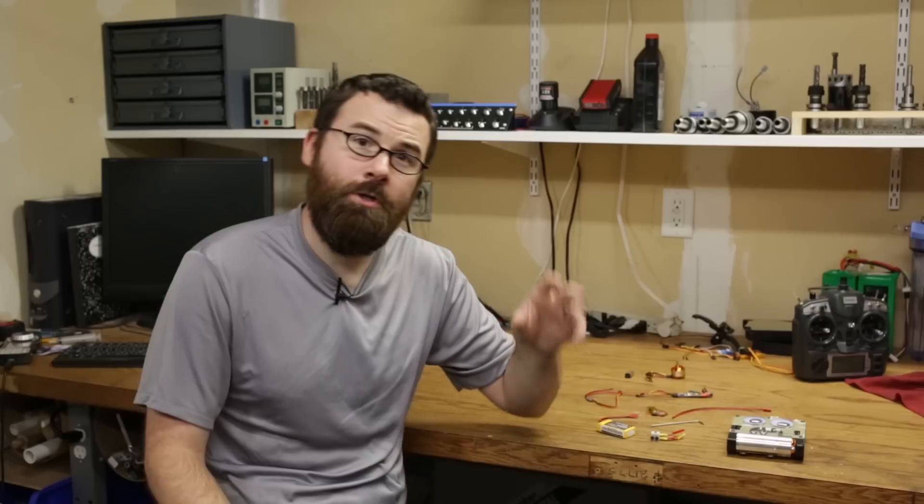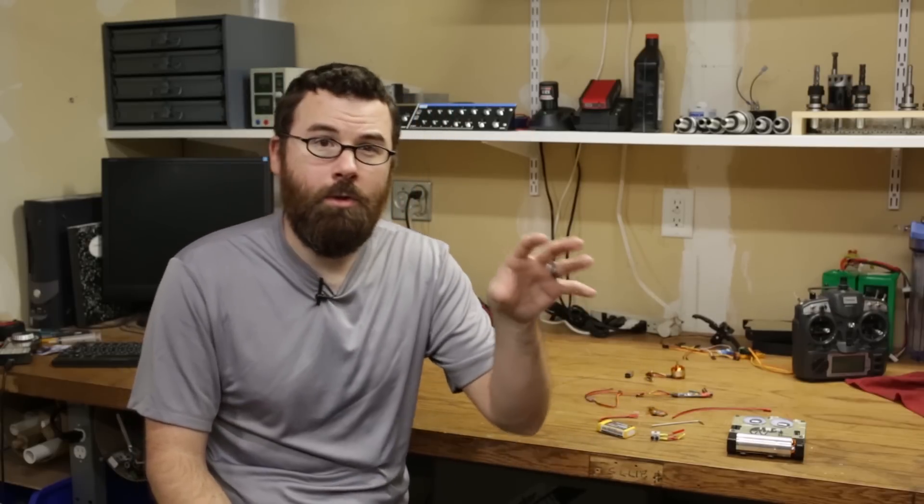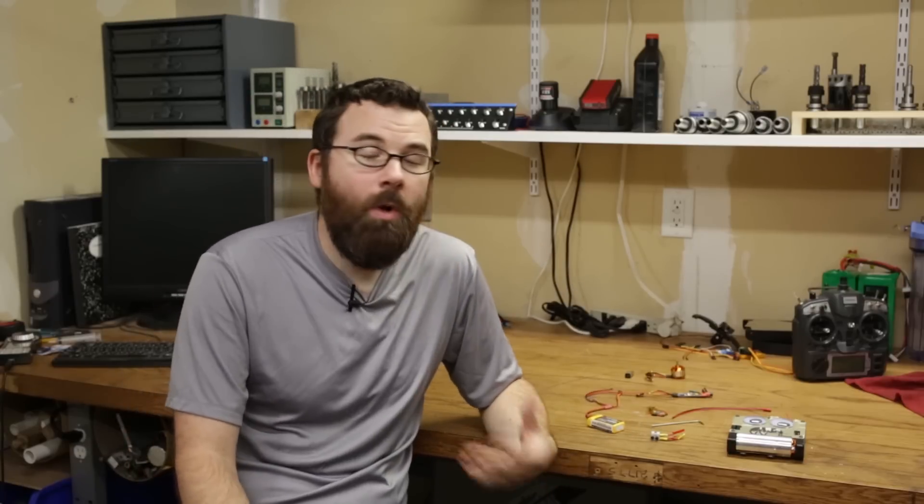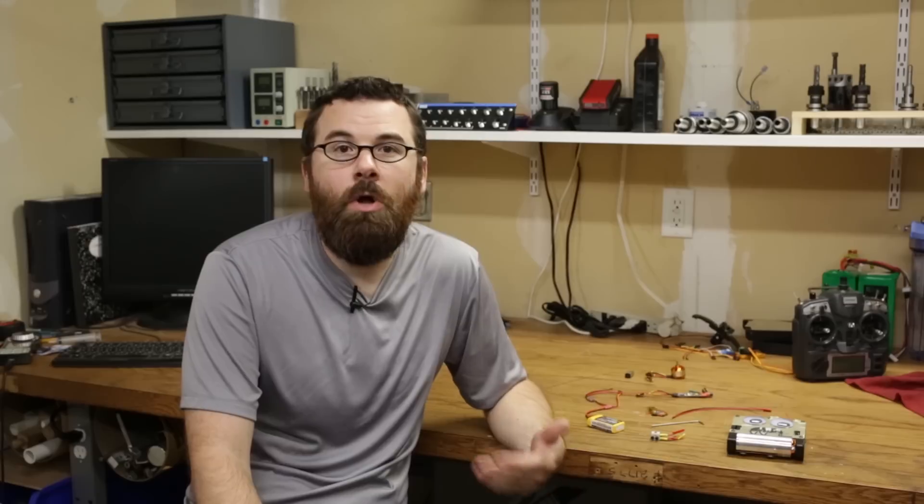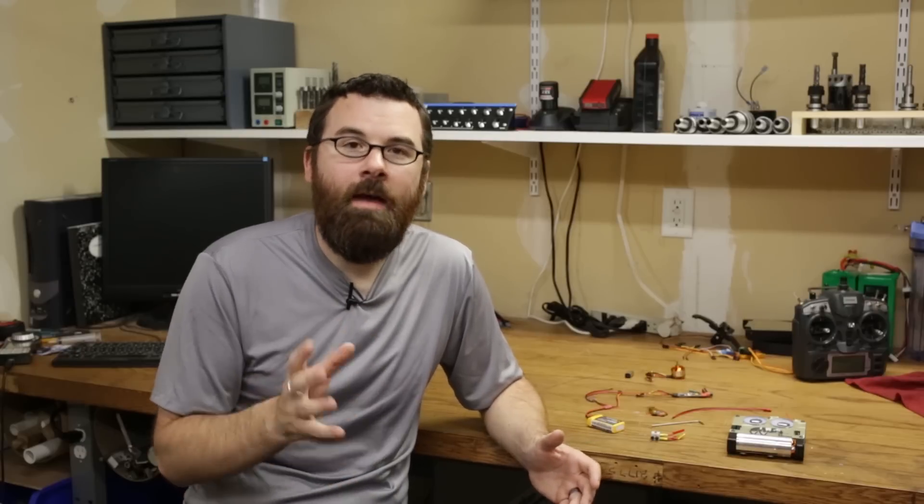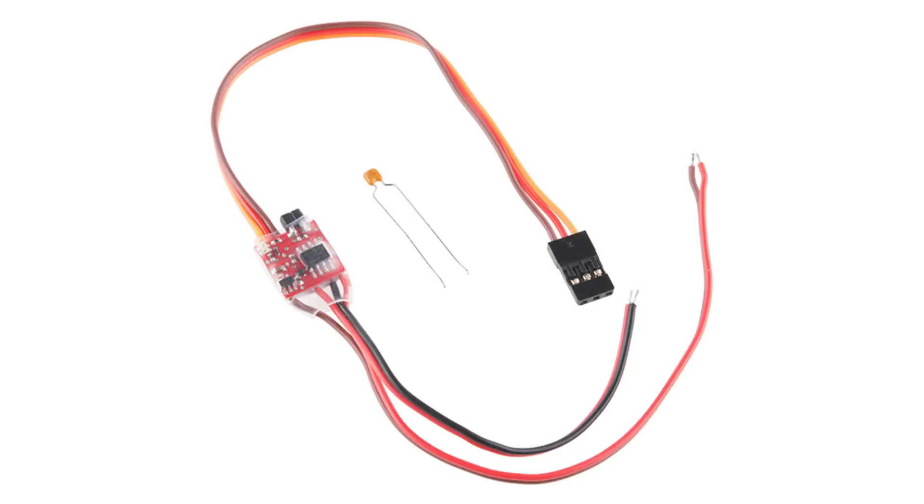So you're not going to do like a 5 volt battery just for the receiver side, and then maybe a 12 volt battery for the drive, and then maybe a higher voltage for the weapon. You're probably going to have just one battery. So what you need to concern yourself with is what's called a BEC or battery eliminator circuit. A lot of drive ESCs have a battery eliminator circuit built in. I'm using this tiny ESC from Fingertech Robotics, and it has that built in.